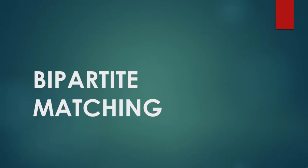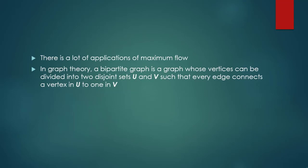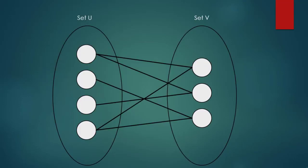In this video we are going to talk about one of the most important applications of maximum flow, which is bipartite matching. In graph theory, a bipartite graph is a graph whose vertices can be divided into two disjoint sets U and V, such that every edge connects a vertex in U to one in V. The edges start in one set and end in the other — there's no edge between vertices within the same set.